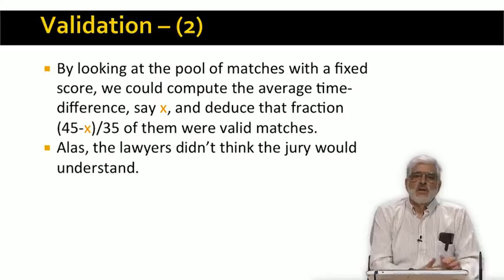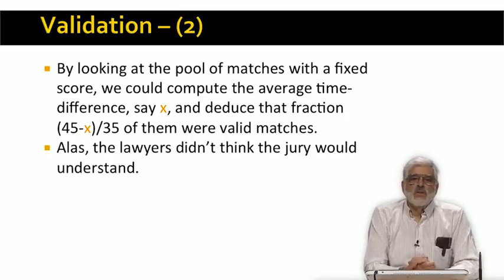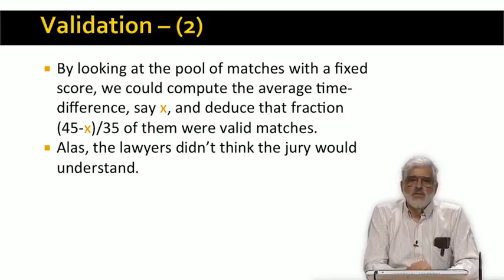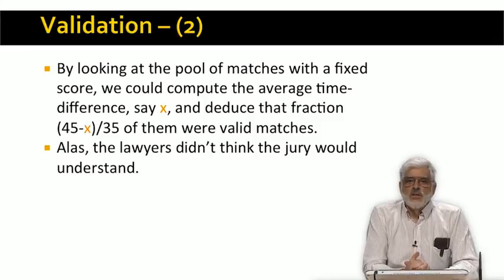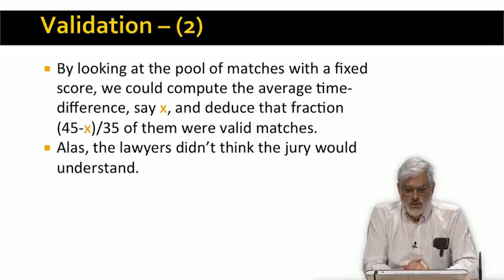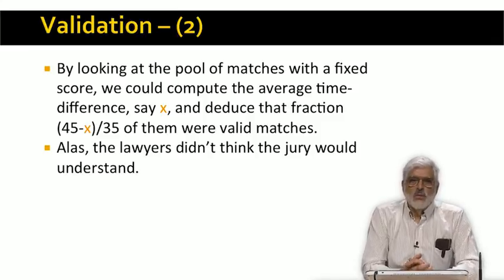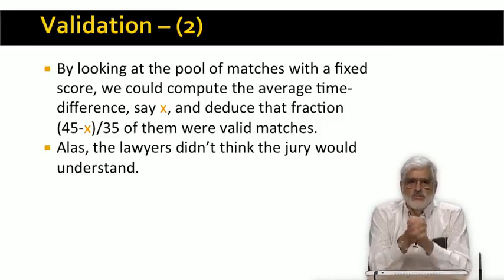We tried to convince the lawyers that they should go into court with a claim of a fraction of each of the pools that had average delays less than 45, even though we couldn't tell which pairs in each pool were valid and which were not. But the lawyers told us not to even try because no judge or jury would understand the argument. But you understand it, don't you?